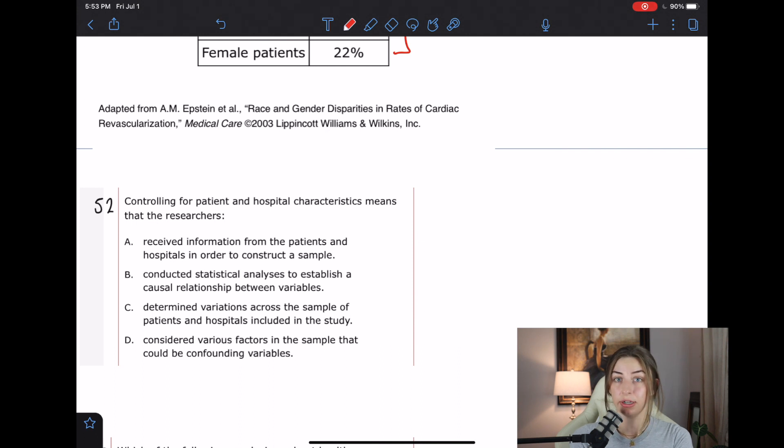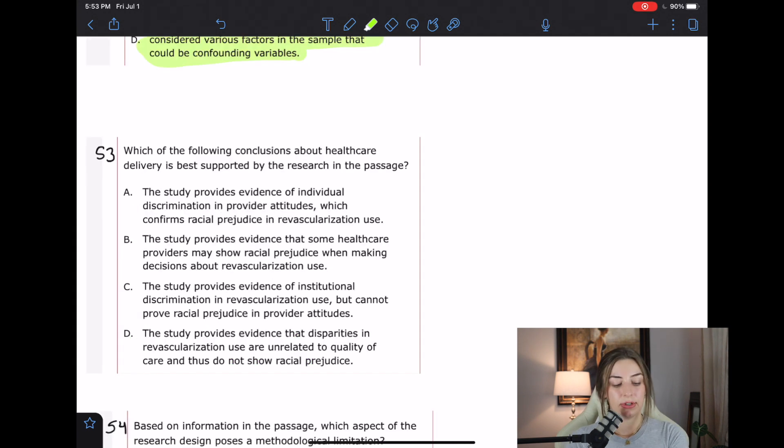C: determined variations across the sample of patients and hospitals included in the study. Just determining the variations is not enough, that's not the definition of controlling for something. D: considered various factors in the sample that might be confounding variables. Yes, that's perfect. And again, usually this is like a statistical consideration, but yeah, this definition works.